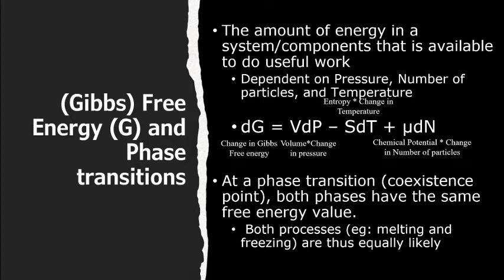Contrasting entropy, Gibbs free energy describes the amount of energy in a system or system's components that is available to do useful work. This quantity changes depending on temperature, pressure, and the number of particles.